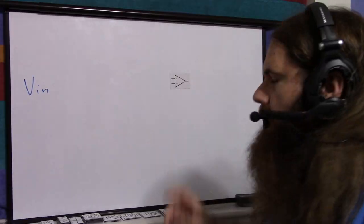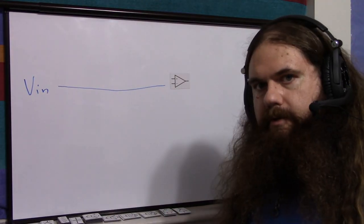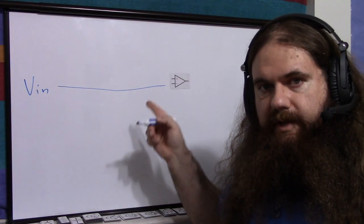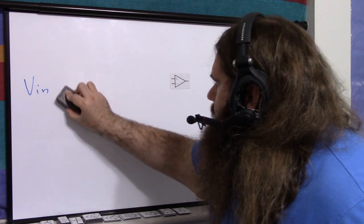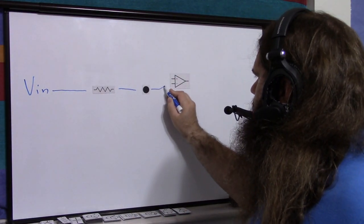We'll call it Vin. I am going to connect Vin to the inverting input of the amplifier, not the non-inverting, not the positive, the negative, but we need a resistor. One resistor, voltage in through a resistor, and into the inverting input.